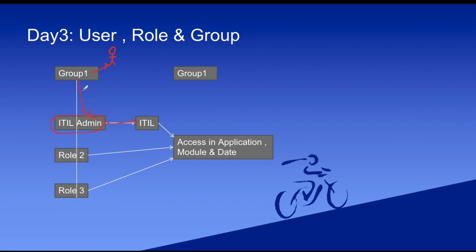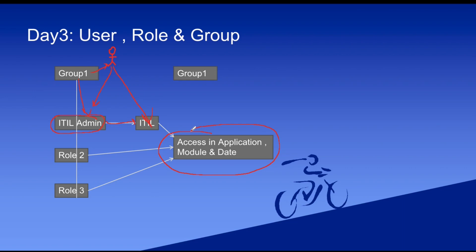Once we add a group to the user, that group will have whatever role is assigned — so the user will automatically inherit that role. I don't have to add the role directly to the user; I'll add the user to the group, and the user will automatically get the role from the group. If that role has any child roles, those child roles will also be automatically inherited. Based on the role, they will have access to applications, modules, data, and all those things.